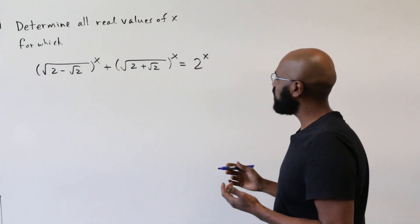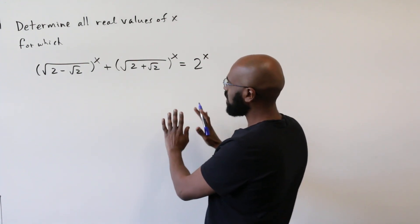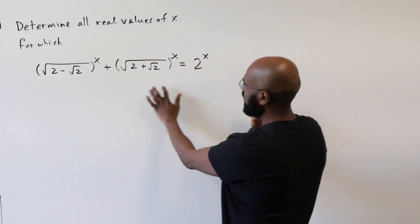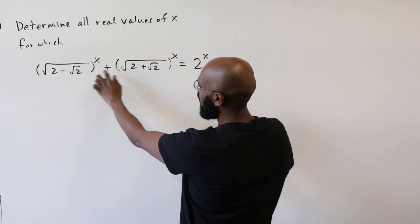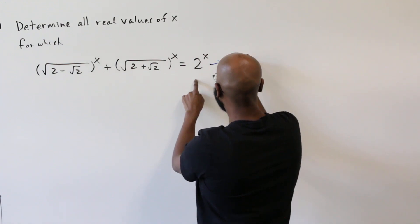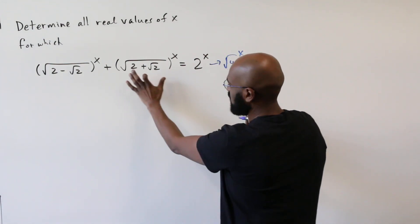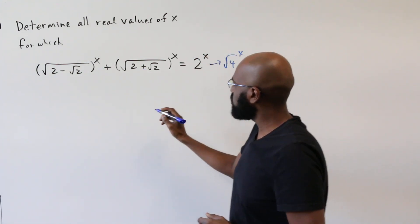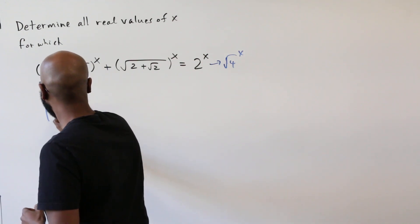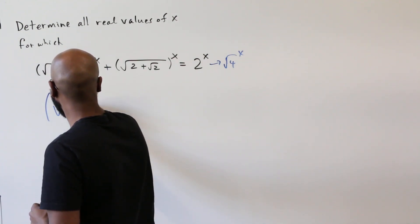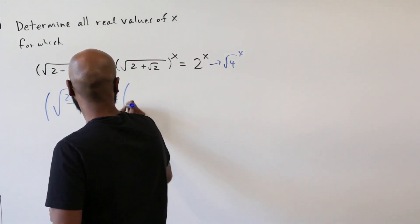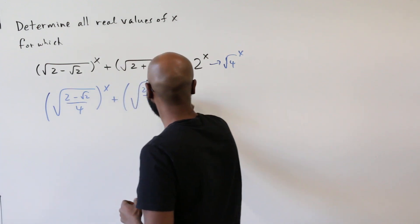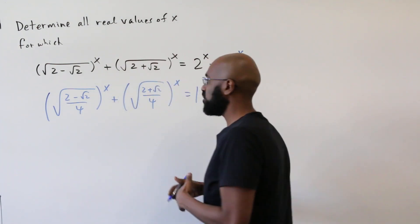To start off, one thing we'll do is rearrange things so that we have a constant to work with somewhere, and one way to do that is by dividing by 2 to the x. Since we have radicals here, it'll be convenient to write this as root of 4 to the x, so we know what's going to be engulfed into the arguments inside of the radicals. So if we do that division, we'll get the square root of (2 minus root 2) over 4 raised to the x plus the square root of (2 plus root 2) over 4 to the x equals 1.